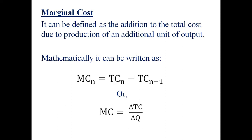Marginal cost is just the addition to the total cost for producing an extra unit of output. Mathematically, you can find marginal cost as: MC of the nth unit equals total cost of n units minus total cost of n minus 1 units. You can also find marginal cost as change in total cost divided by change in total quantity.